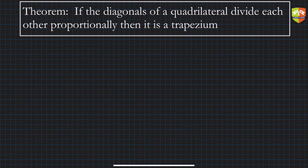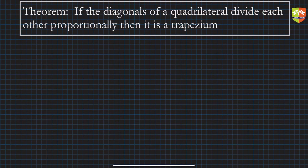Hello friends, we are going to prove another theorem in this session. The theorem says that if the diagonals of a quadrilateral divide each other proportionately or proportionally, then it is a trapezium. So if the diagonals of a quadrilateral — let us draw a quadrilateral.